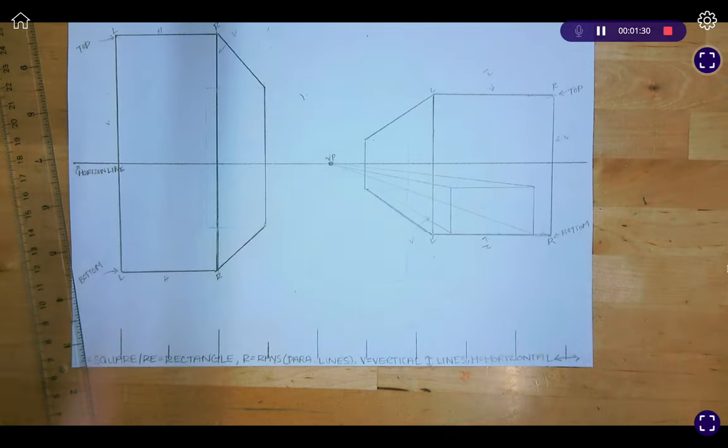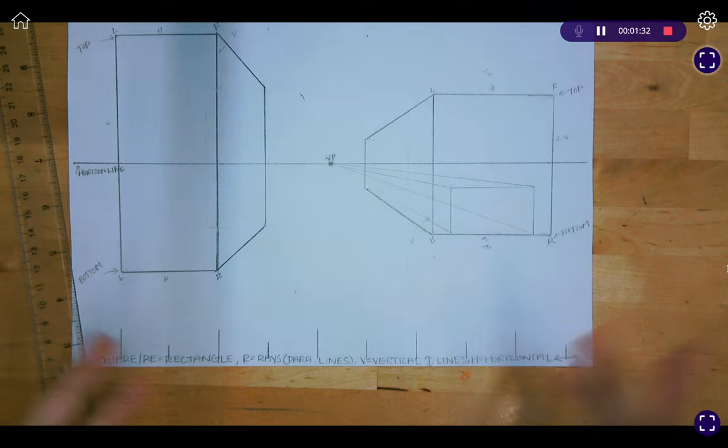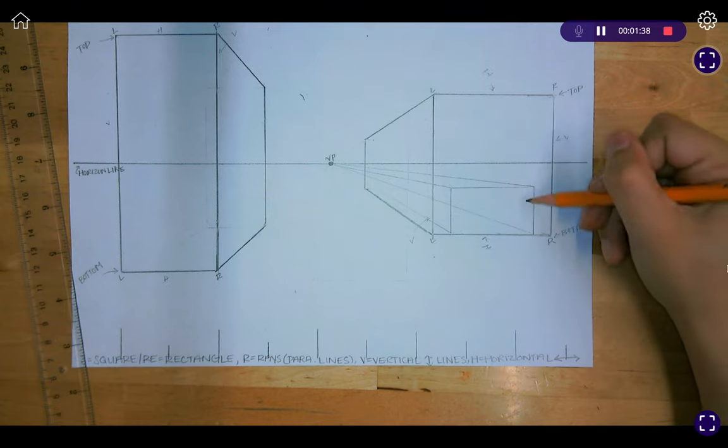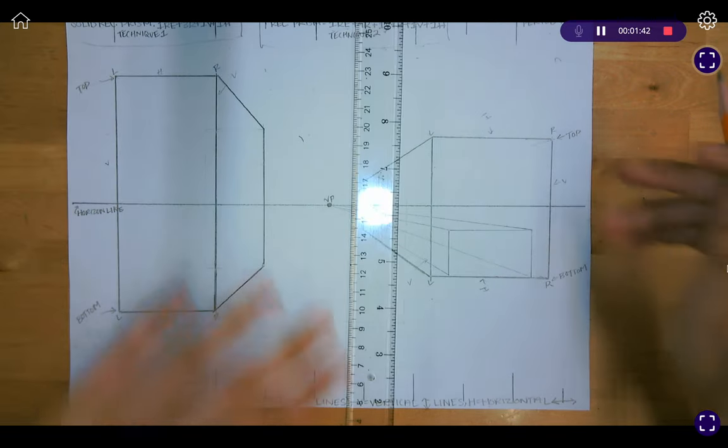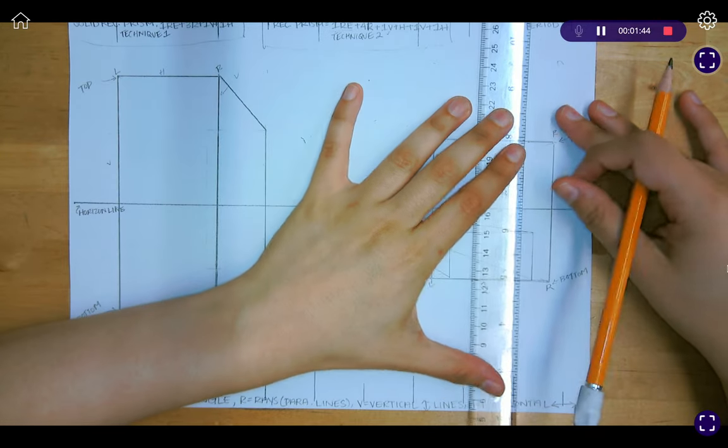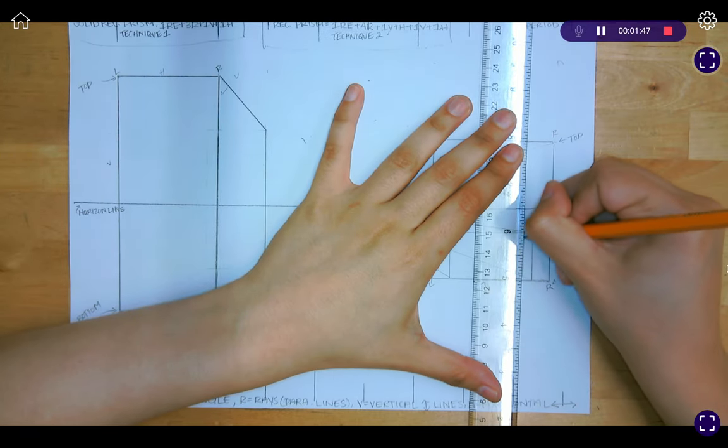Okay, so now we're drawing basically a rectangular prism within a cube. All right. From here, we're going to go ahead and we are going to draw one vertical line. Okay. Over here. I'm going to draw it over here first. So I'm going to say that this is the vertical line.